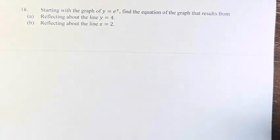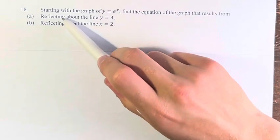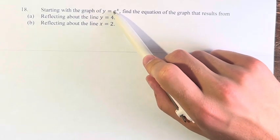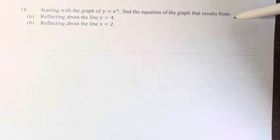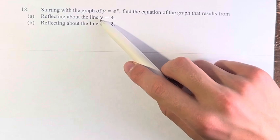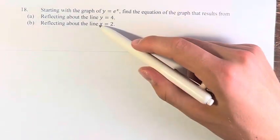Hello, and welcome back to another video. In this problem, starting with the graph of y equals e to the x, we're asked to find the equation of the graph that results from reflecting about the line y equals 4 and the line x equals 2.